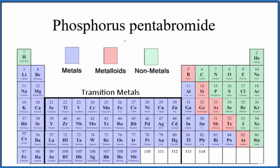we can find phosphorus, that's right here, and then bromide, that's bromine, that's right here. Both of these are nonmetals.